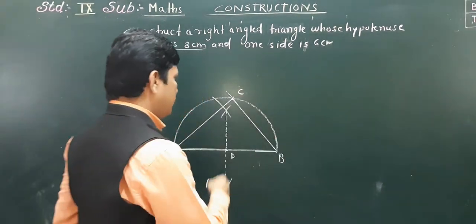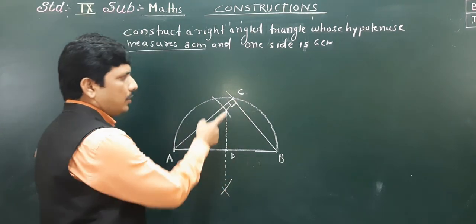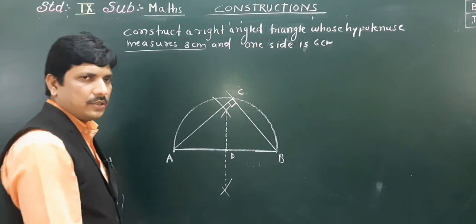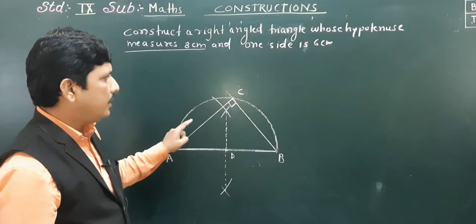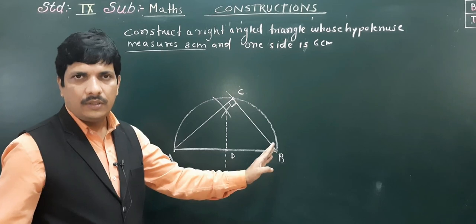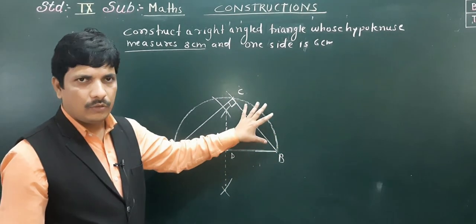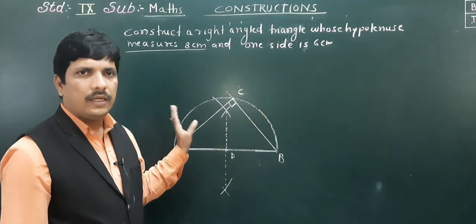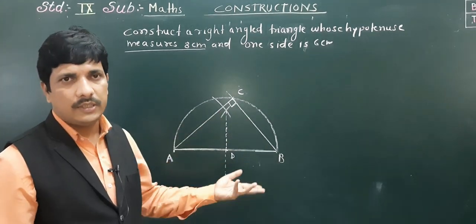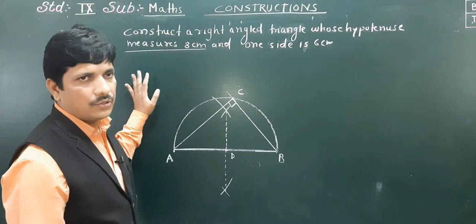This is right triangle ABC, with the right angle at C. So this angle is 90 degrees, and AB is the hypotenuse. AC is 6 centimeters, and you can find the length of BC using Pythagoras. We can also cross-check with a ruler — it comes out exactly the same.